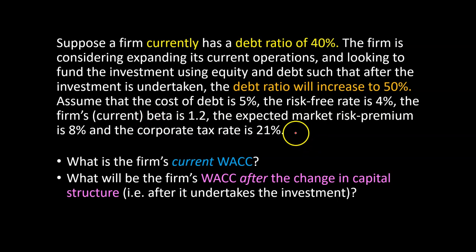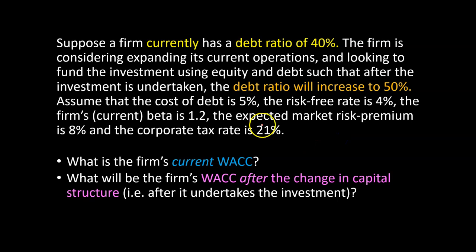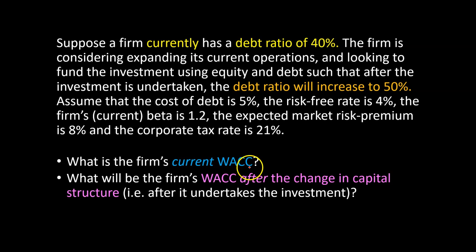So this is important. Whenever we refer to the firm's beta, we are referring to its equity beta, and the symbol I'm going to use for that is beta S, which is beta of the stock. So beta S is right now 1.2. The expected market risk premium is given as 8%, and the corporate tax rate is given as 21%. The first thing being asked is what is the firm's current weighted average cost of capital? The second, perhaps more important question is how does the WACC change, or what will be the firm's WACC after the change in capital structure?